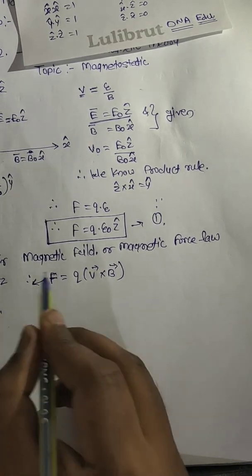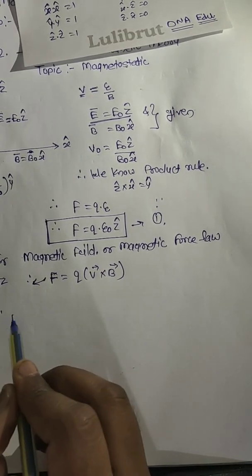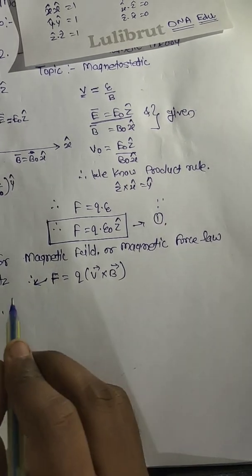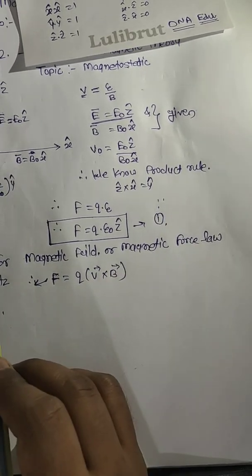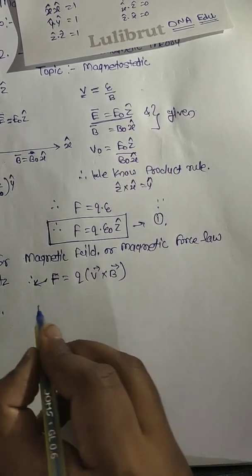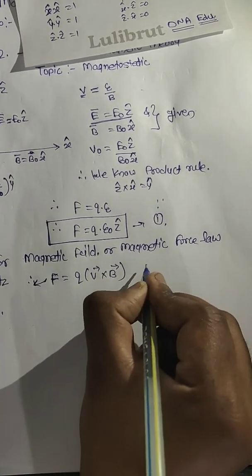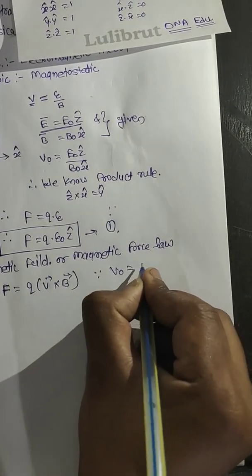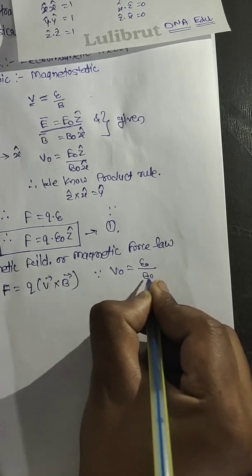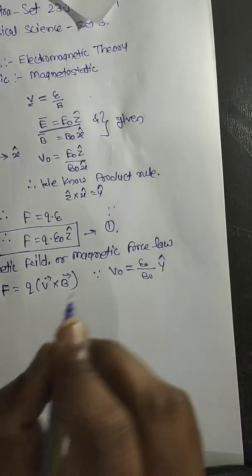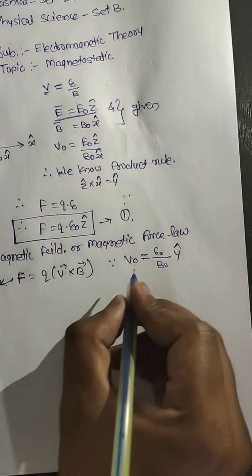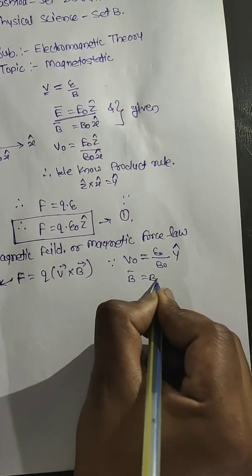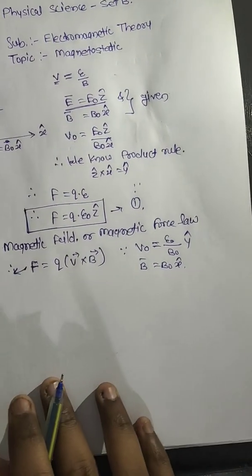Now question: V₀ is equal to electric field upon magnetic field in y cap direction, and B is equal to B₀ in x cap direction. So we have given the values.